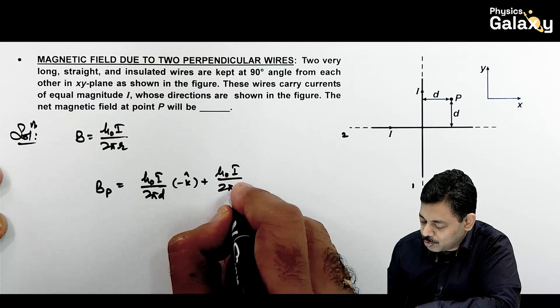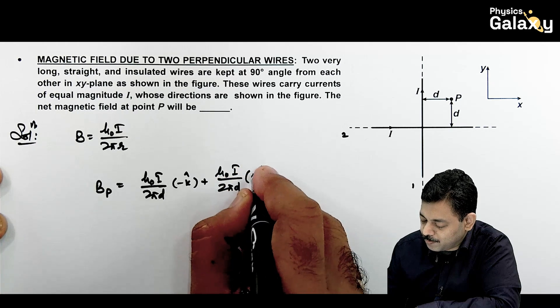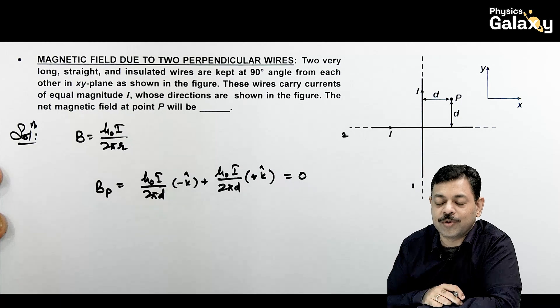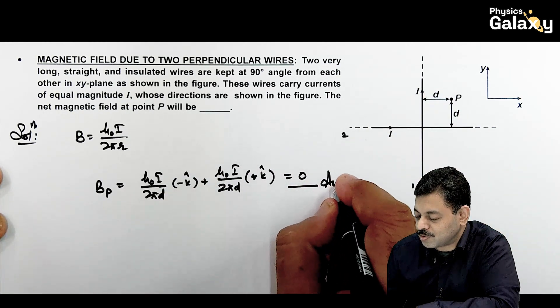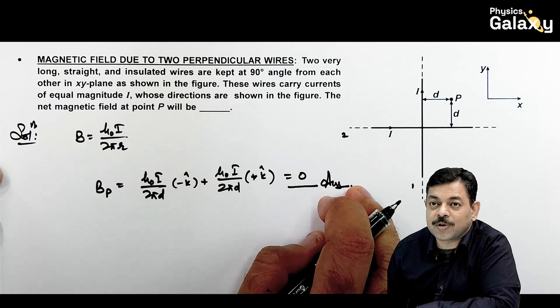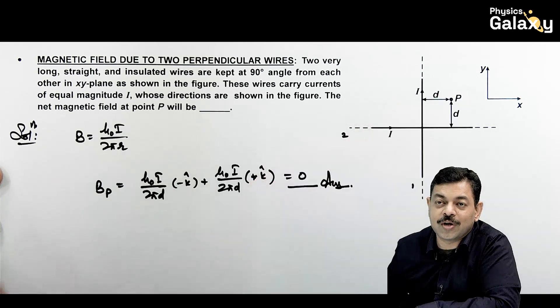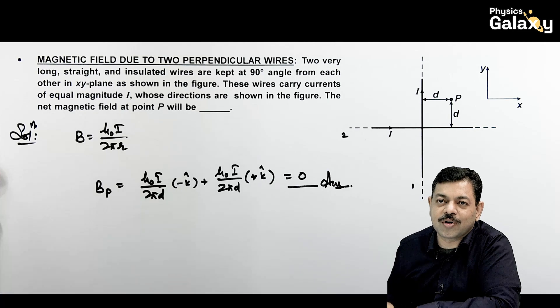Same field magnitude, mu naught i by 2 pi d, and this is plus k cap. This comes out to be zero. Directly you can see the result and mark zero as the answer to this question. In most cases you'll see questions like this where using common sense, carefully evaluating, you can directly get the answer.